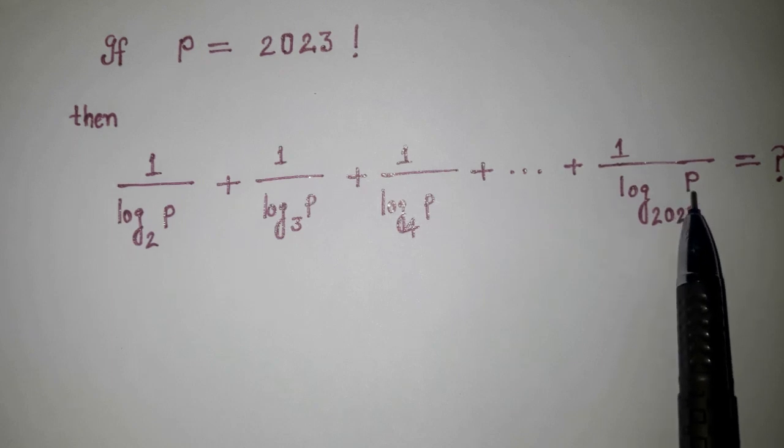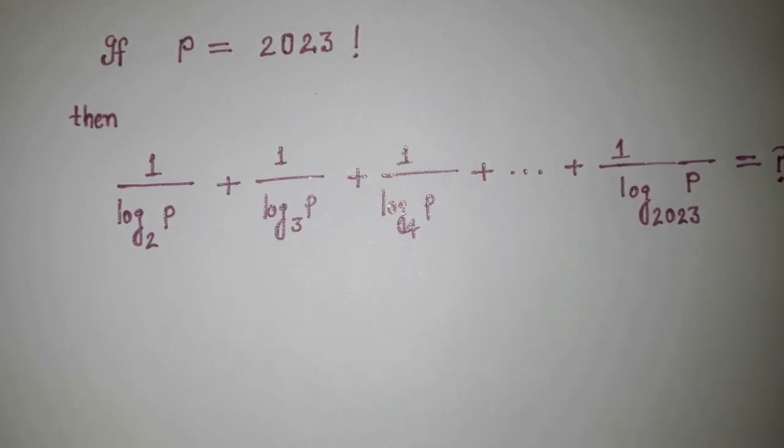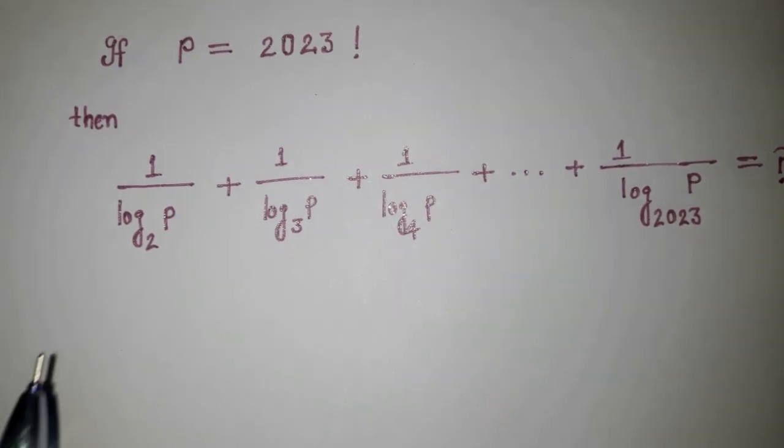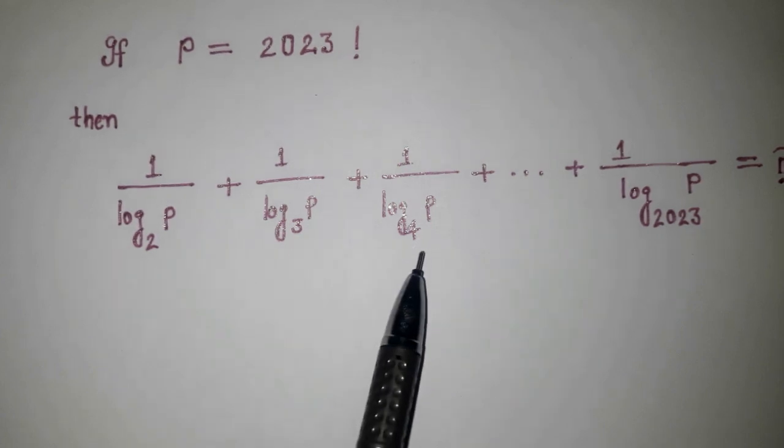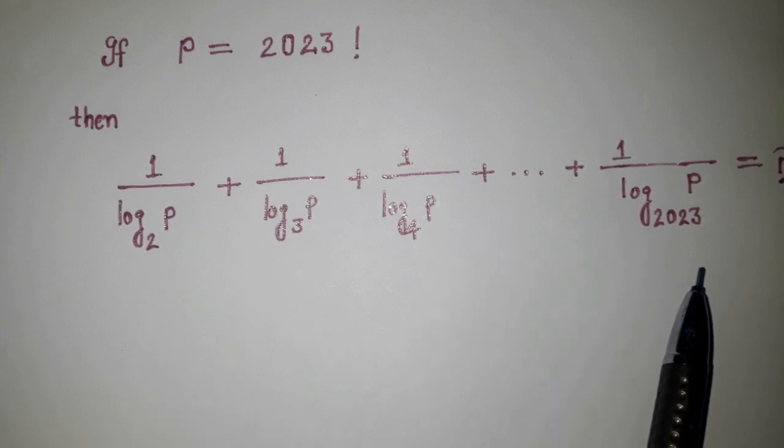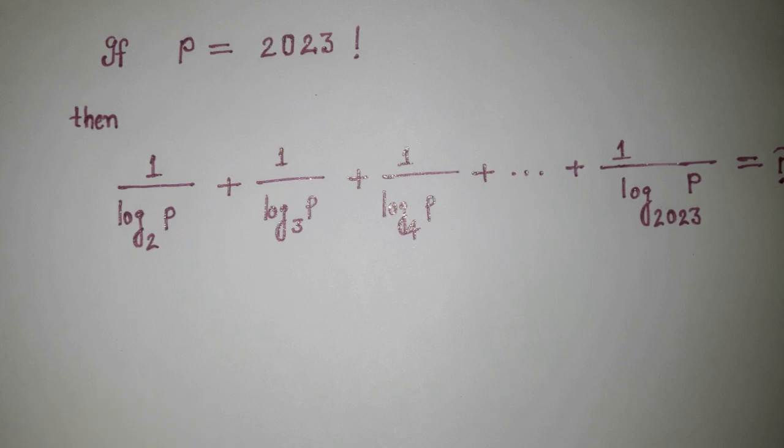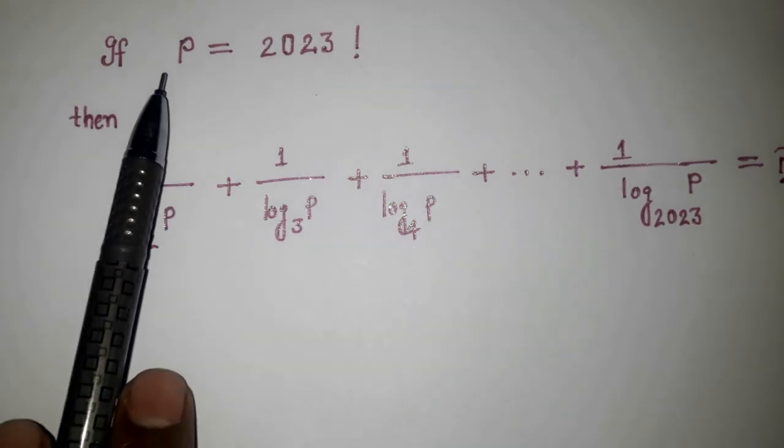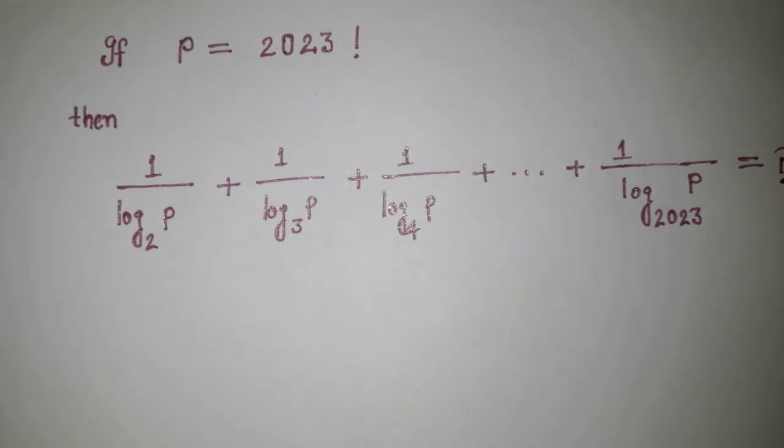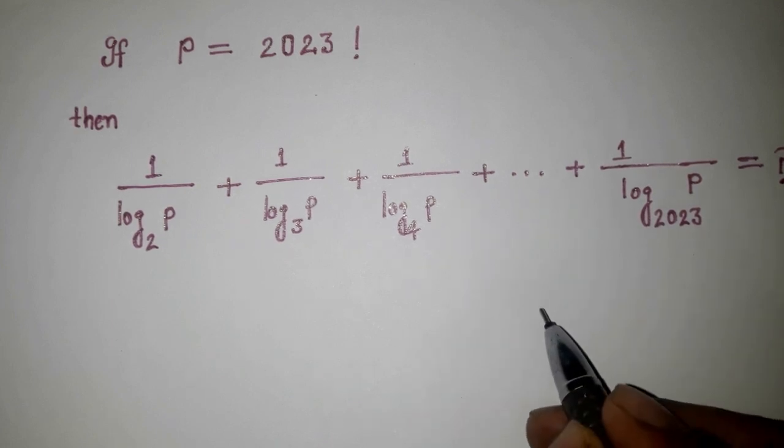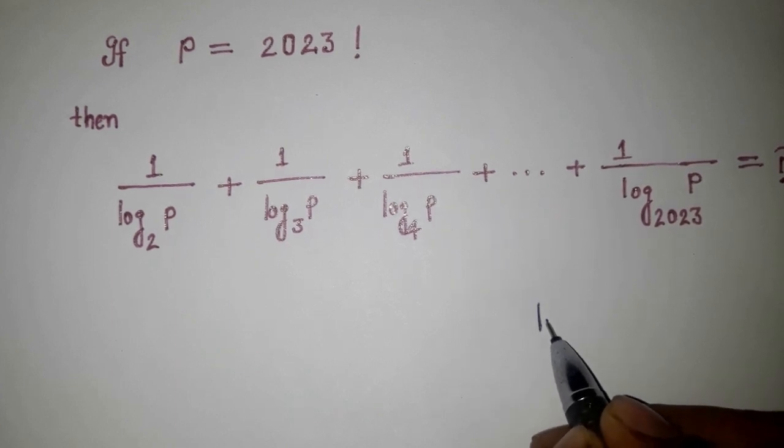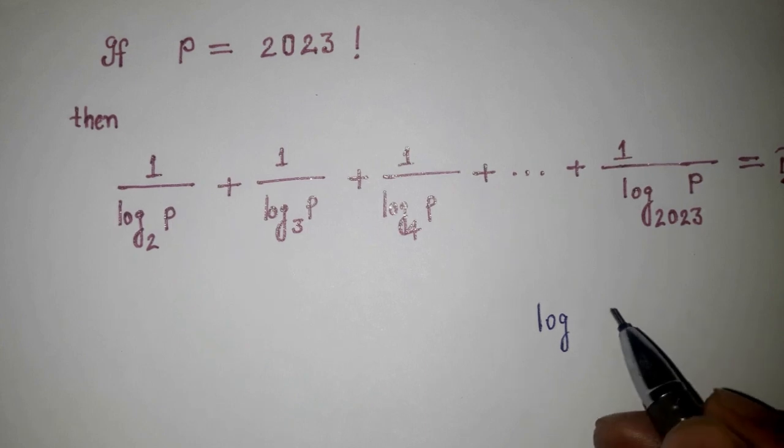Here you are seeing that the bases 2, 3, 4 are all incrementing by 1 and reach up to 2023. We have the assumption P equals 2023 factorial. How can we get the answer? How can we add this sum? It is looking very tedious, but we have one formula that can help us to solve this problem.